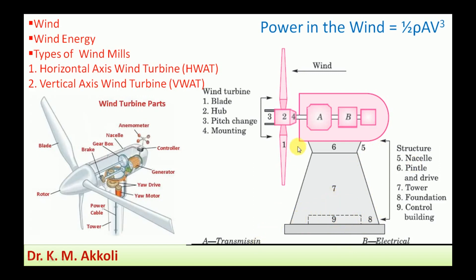Inside the nacelle the components are divided into two parts. Part A is the transmission side: the slow mechanical rotary shaft energy passes through a gearing system to increase velocity, which is then coupled to the turbine. Part B is the electrical side: the shaft is connected to the generator which produces electrical energy. A yawing mechanism turns the wind turbine to face the wind direction.